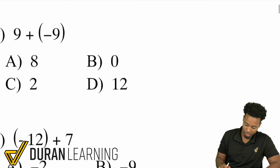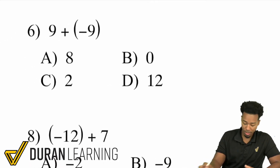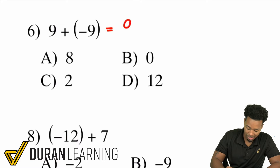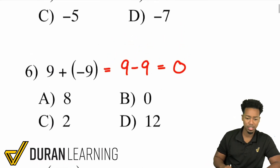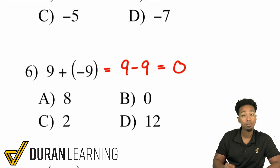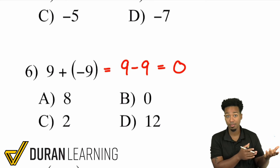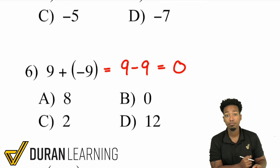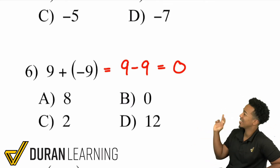Number 6: 9 plus negative 9. If you're adding a negative, that's the same thing as subtraction. So 9 plus negative 9 is the same as 9 minus 9, which is 0. You can also look at it the other way: take the difference of a positive 9 and a negative 9 — 9 minus 9 is 0. What sign do we keep? It doesn't matter — it's 0, so you're good anyway.